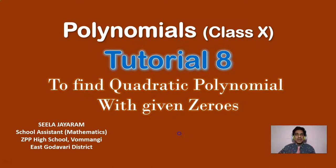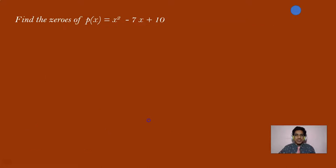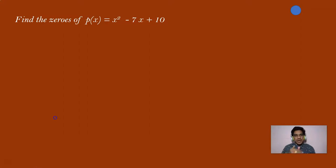That polynomial will be used every time to get the zeros. Have a look at this polynomial. We need to use the zeros — this is the actual procedure.